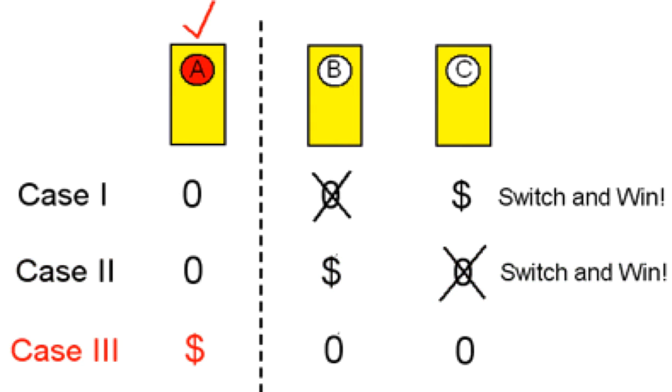And finally, if you're in case three, where you chose door A and the prize is behind door A, the host can reveal either one of the remaining empty doors. Say that the host reveals door B. Note that this is the only case, out of the three, in which in order to win, you should stay with the door you initially chose.